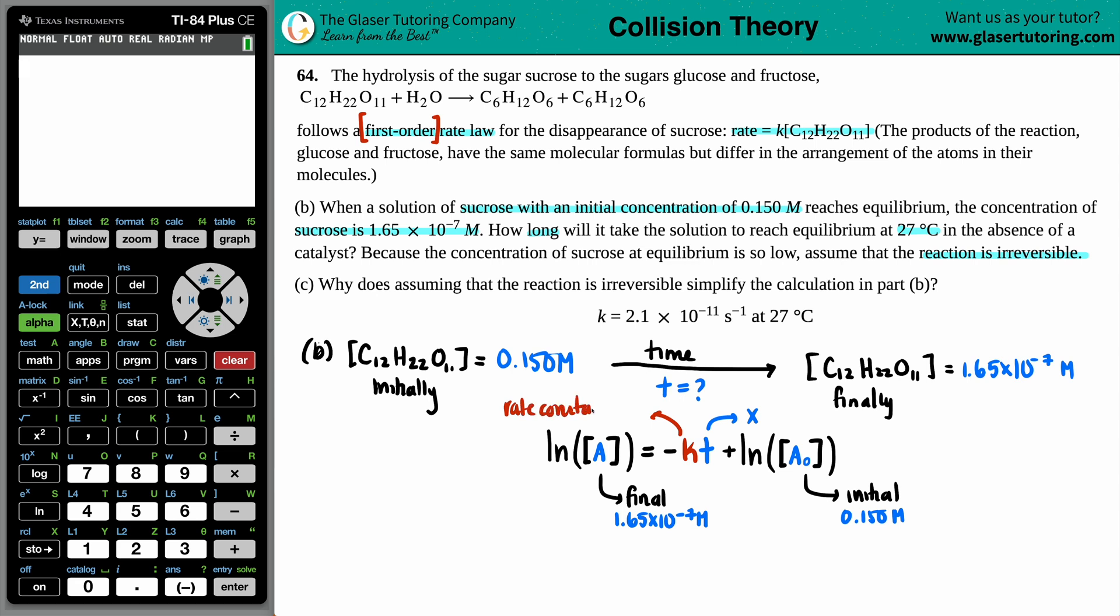Now, in part A of this question, it did state that the K value at 27 degrees Celsius, and that's what the temp we're at. So I know in part A that there was a couple of different rate constant values, different K values. We had to pick the right one. The temperatures have to match. So in this case, the rate constant that we're going to use is the 2.1 times 10 to the negative 11th per second.